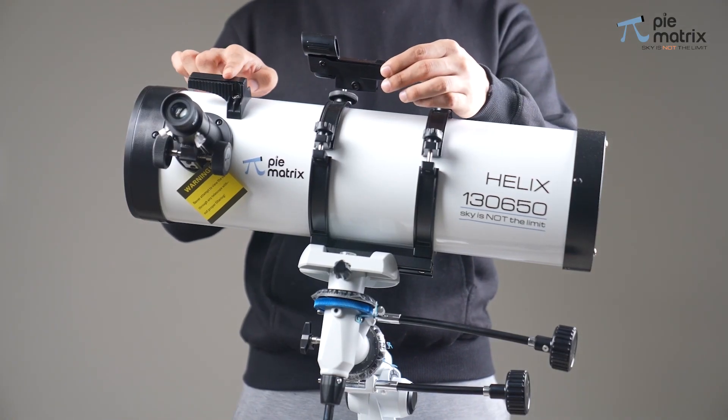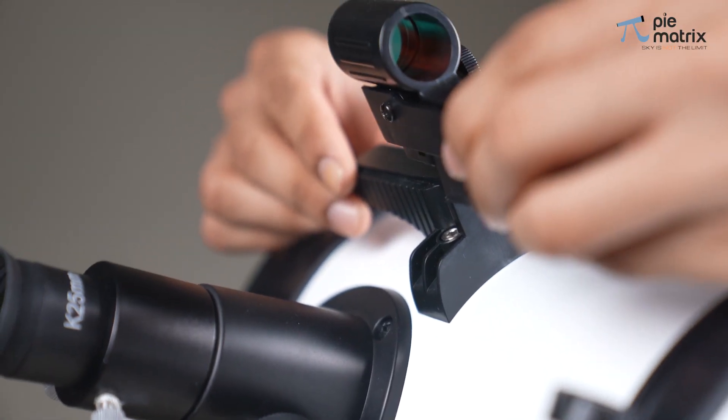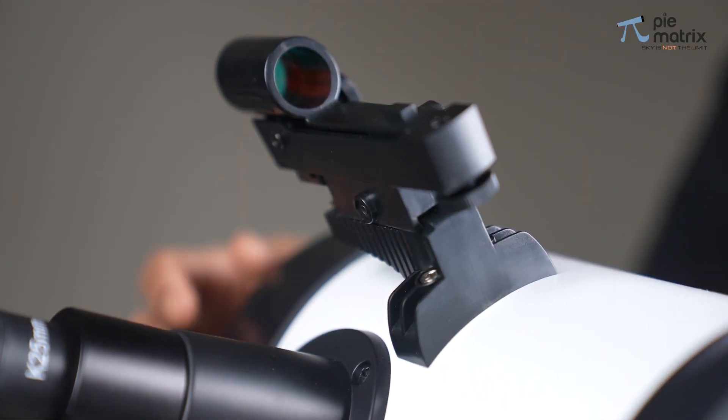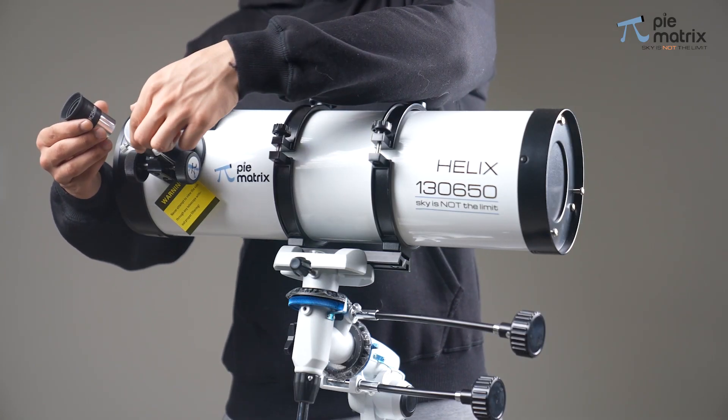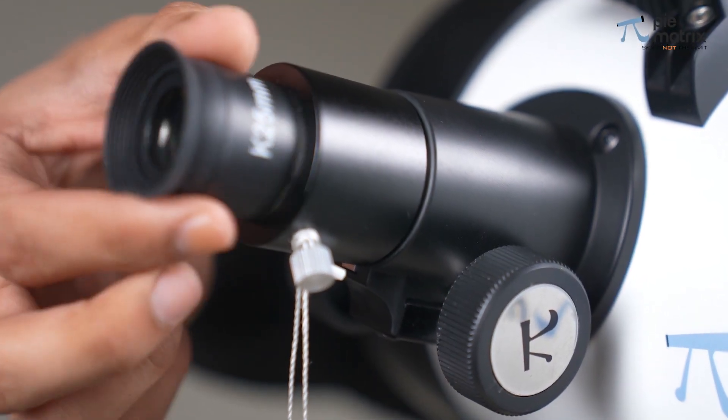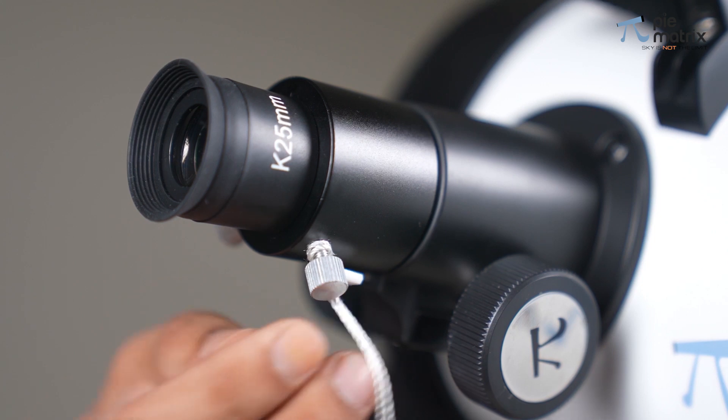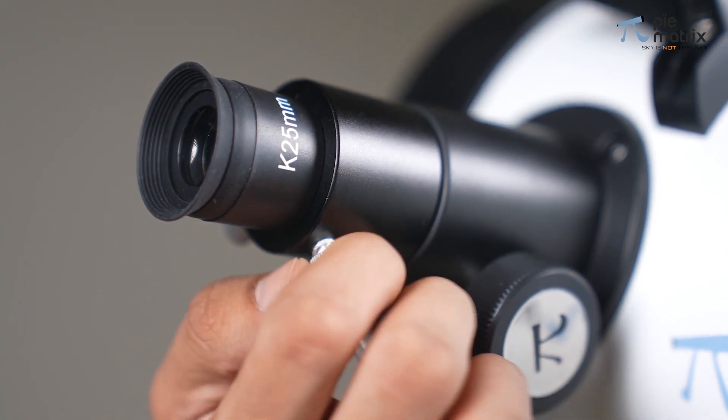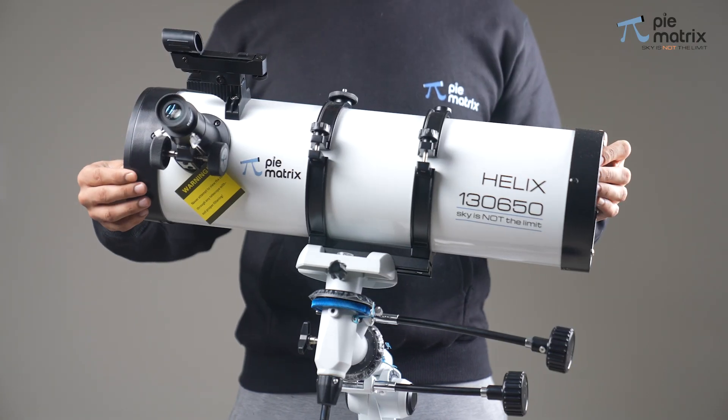The red dot finder scope goes on the top of OTA like this. Now remove the dust cap from the eyepiece barrel. Insert any provided eyepiece and enjoy the beautiful sky.